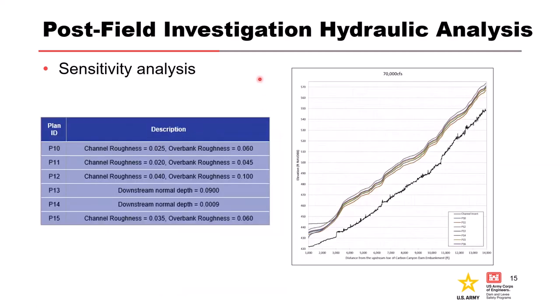We need to perform sensitivity analysis on model parameters to quantify the variability in flow magnitudes. Typical sensitivity runs include varying channel and overbank roughness values and downstream boundary conditions. On the plot on the right, these profiles show different sensitivity runs for a given flow rate by varying channel and overbank roughness, and you can see how that affects the profiles, as well as the downstream boundary condition — changing normal depth to account for that uncertainty.